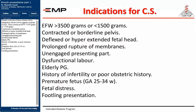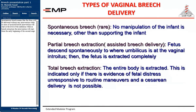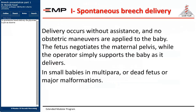A historic score was created by Zatuchni in a trial to standardize breech management. Spontaneous breech means the fetus is delivered without any intervention. In assisted breech, intervention starts at the level of the umbilicus. In breech extraction, intervention starts from the early beginning of the second stage. In spontaneous breech delivery, the physician is just an observer; in cases of fetal distress, the operator intervenes at the level of the umbilicus.